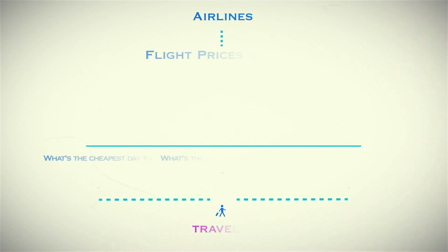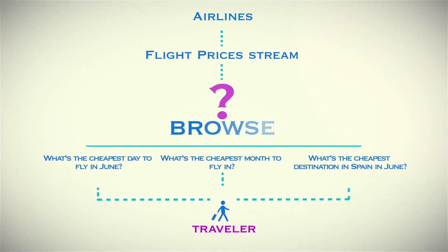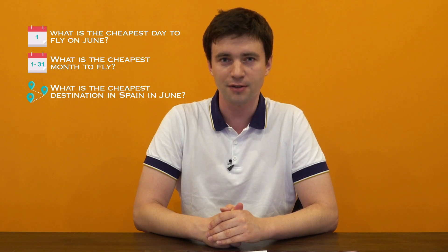From a really high level view, this box with a question mark is what we're trying to build. We continuously receive prices from hundreds of airlines and travel agencies. We have to process them somehow and store them so that we could answer questions like: what's the cheapest day to fly in June, what is the cheapest month to fly, or what is the cheapest destination in Spain to fly. Now that you more or less understand the problem, let's discuss the things we tried that did and did not work over the years.